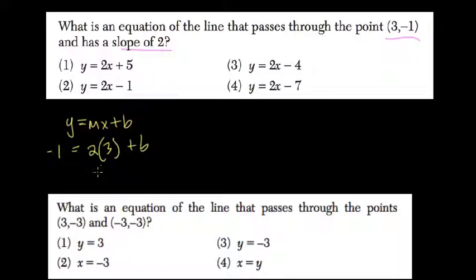You have to solve for b. That's our y-intercept. 2 times 3 is 6. 6 plus b equals negative 1. Subtract 6 from both sides.